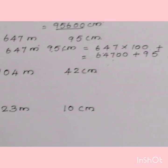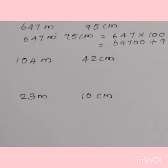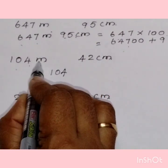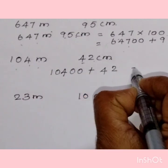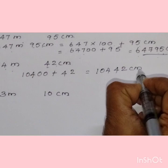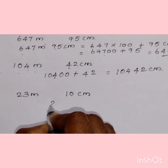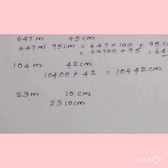Now let us see the next question — it is similar to the previous one. Here I am not going to show each multiplication step; I will directly write the answer. 100 × 104 gives 10,400, and then adding 42 gives 10,442 centimeters. Next question: 23 meters and 10 centimeters. 23 × 100 = 2300, plus 10 becomes 2310 centimeters. This is an easy trick to do the conversions.